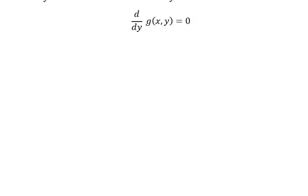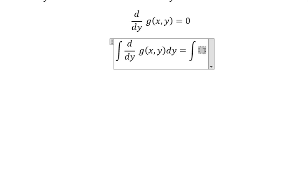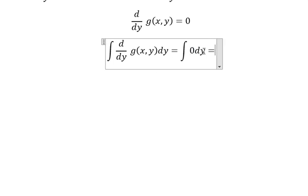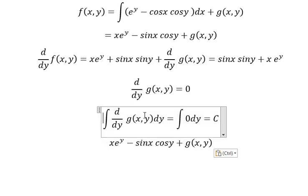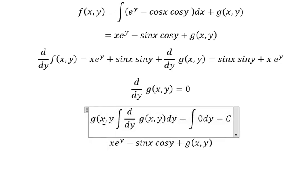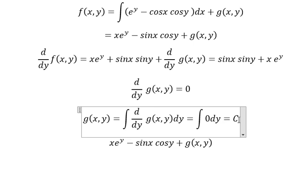We integrate both sides with respect to y. This gives g(y) equals C. Going back to our expression, we have xe^y minus sinx cosy plus C equals f(x,y).